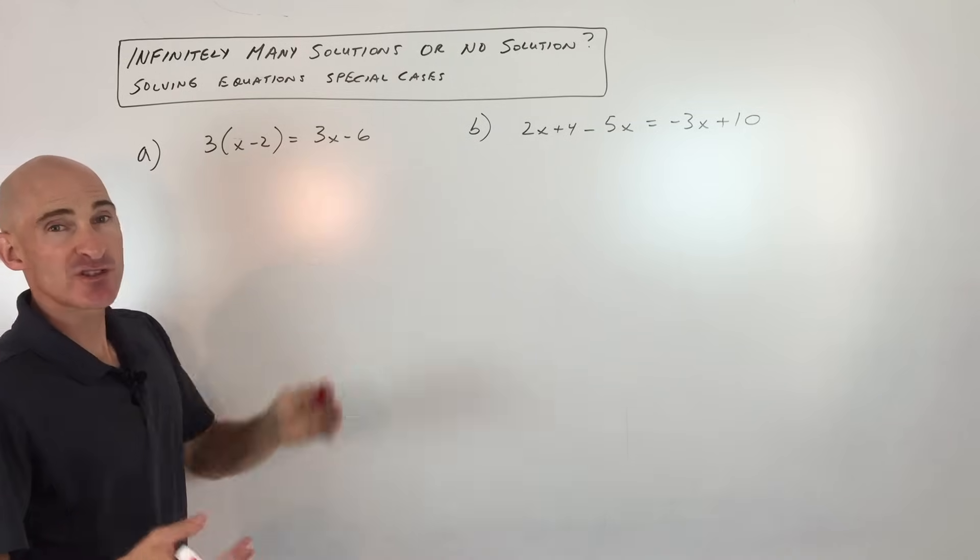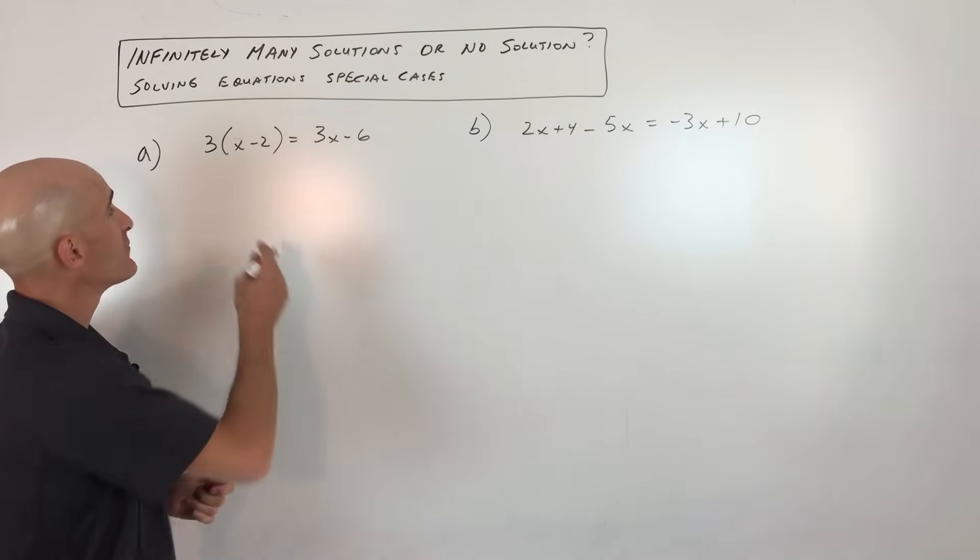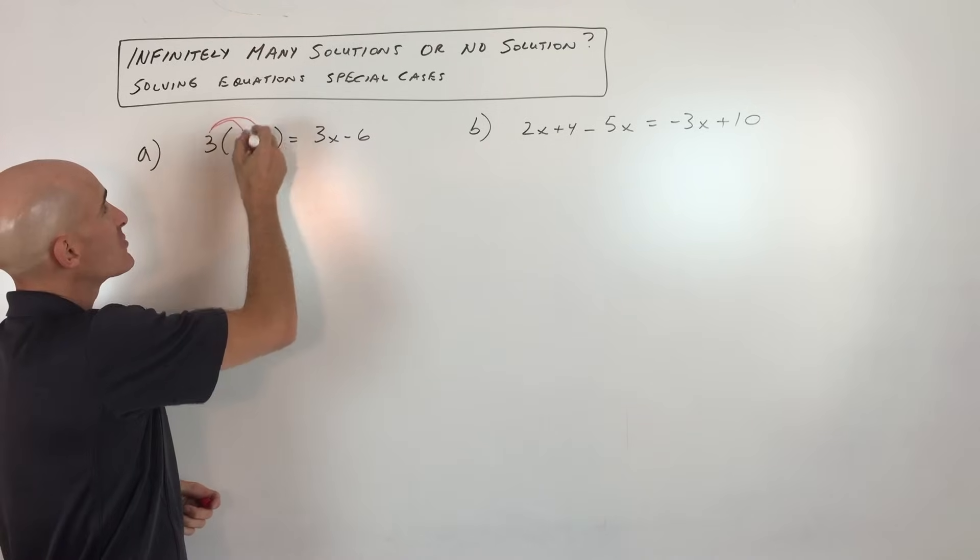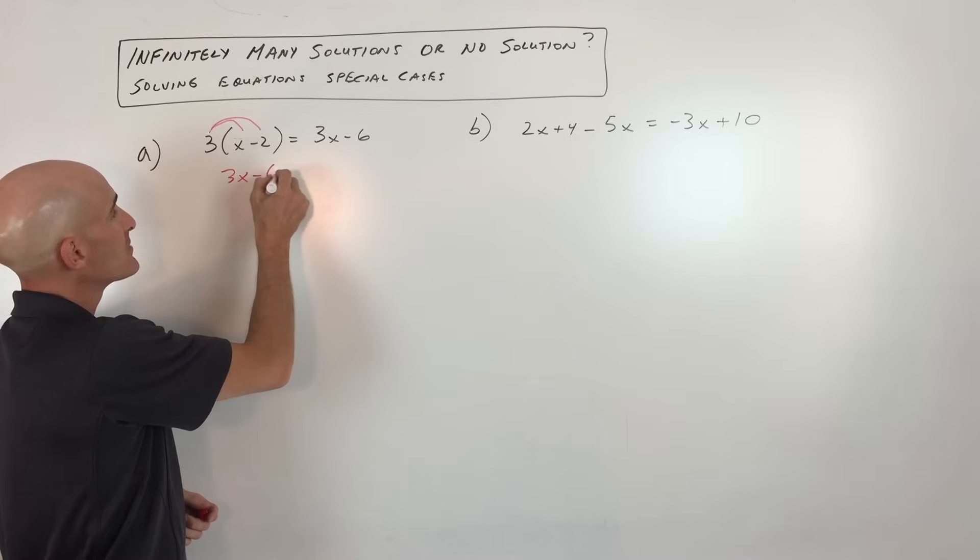Take this first example here. The first thing we do when we solve equations is we try to simplify the left side and simplify the right side. That's the first step. So if I do that, I'm going to use the distributive property to get 3x minus 6.